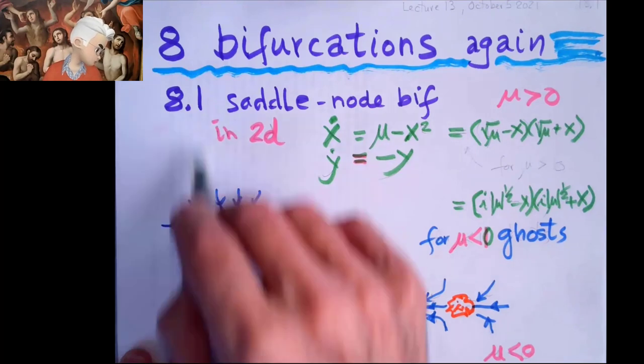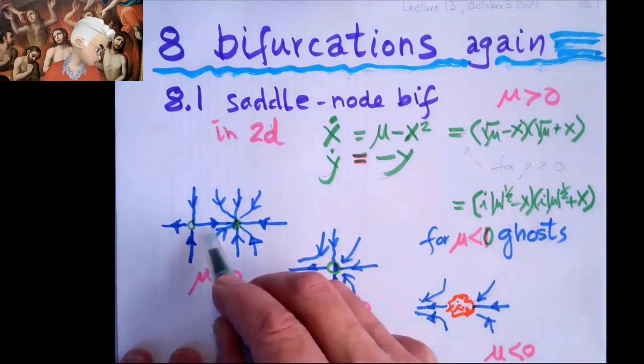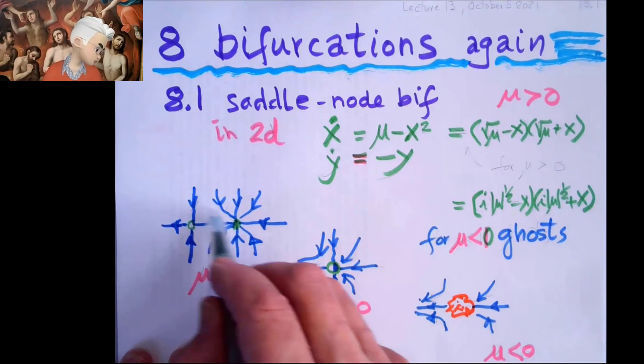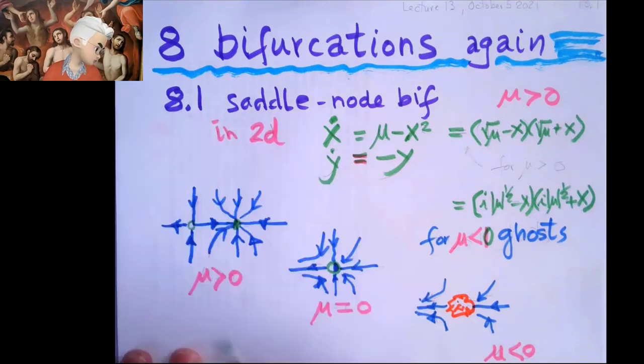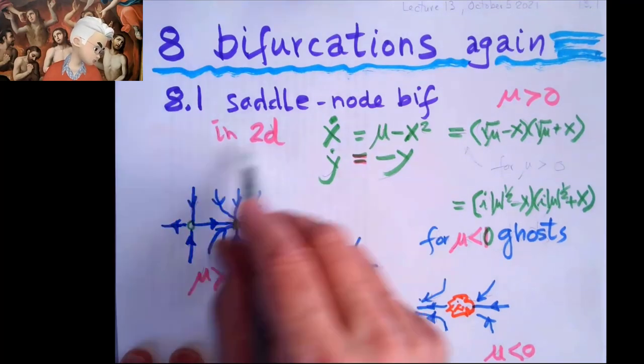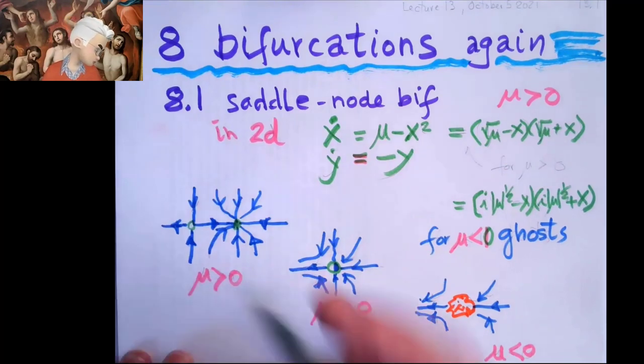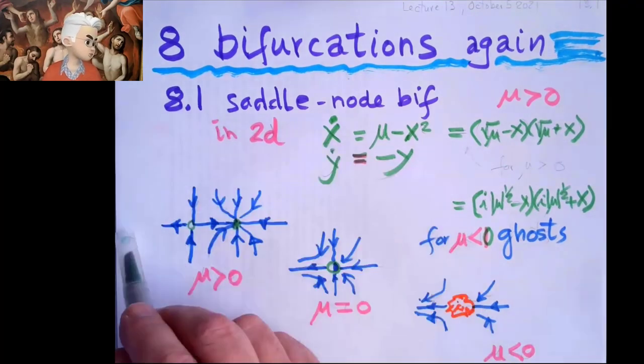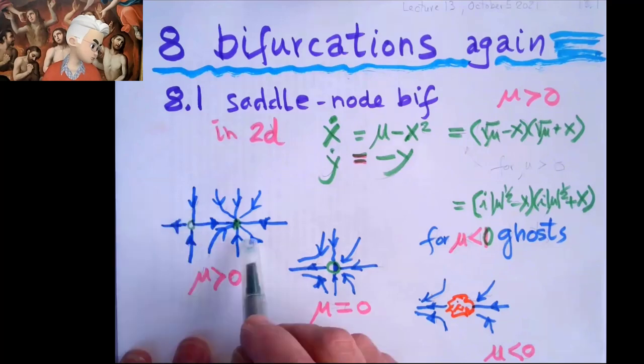But if you're on this side of the stable manifold, just the vertical line in this case, you fall in and you flow every place on the strip to the fixed point, and every place on the right-hand side, you flow to the fixed point. So there's a separatrix. On the left-hand side, you run away. On the right-hand side, you fall in.